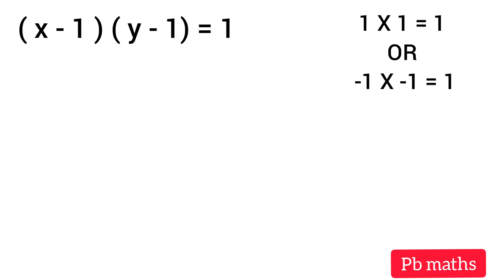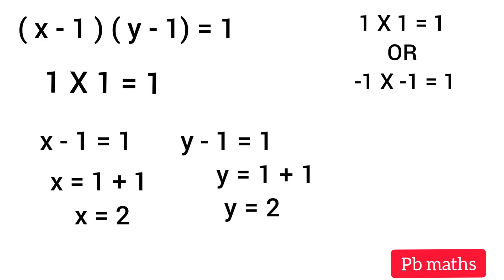If we consider 1 times 1, then x minus 1 equals 1 and y minus 1 equals 1. Then we have x equals 1 plus 1 which equals 2, and y is also 1 plus 1 equals 2.